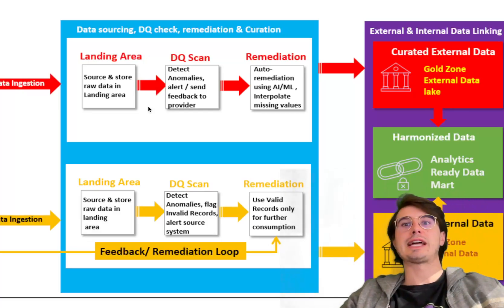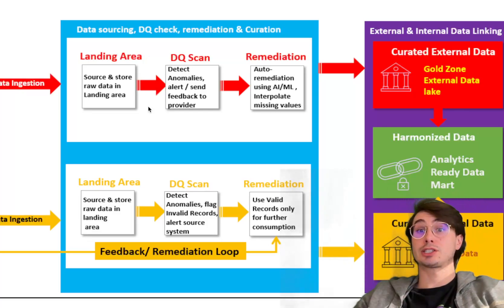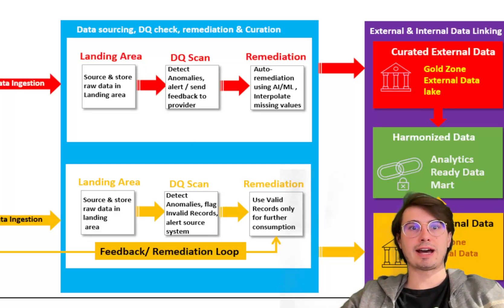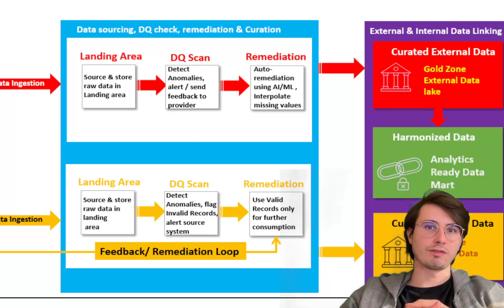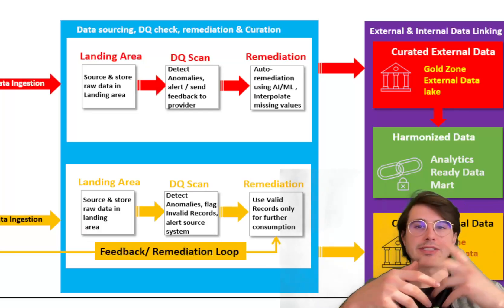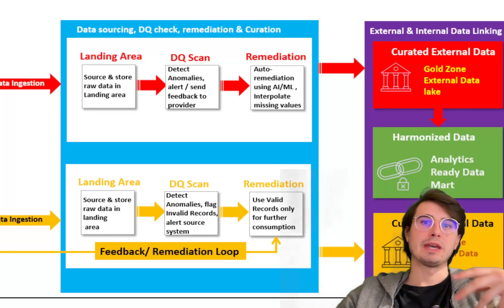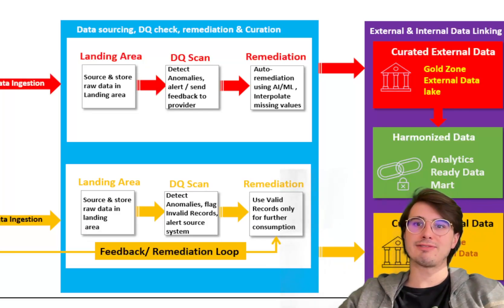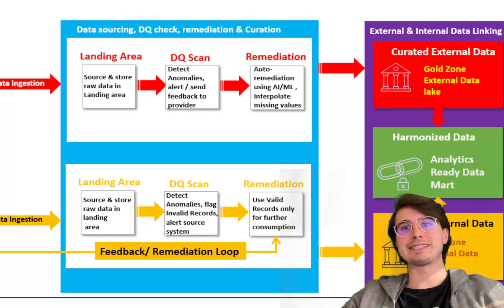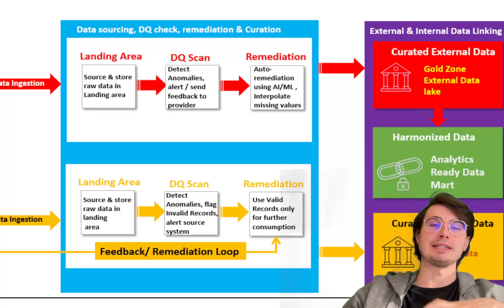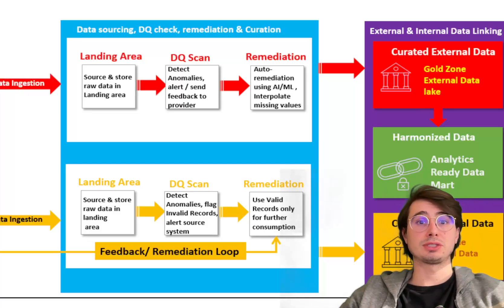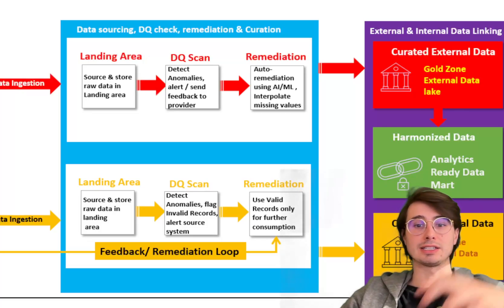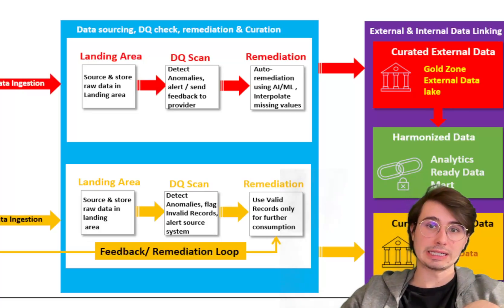Also establish data contracts for critical datasets that specify quality requirements, non-null fields, or specific data formats. Then you can create automated checks to validate incoming data to make sure it adheres to that data contract. This ensures that any data not meeting those standards is flagged or corrected before it affects any downstream systems.